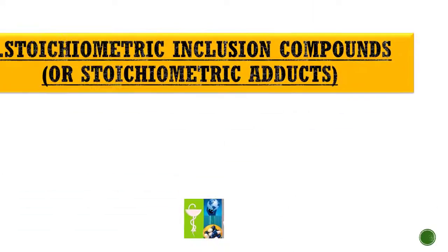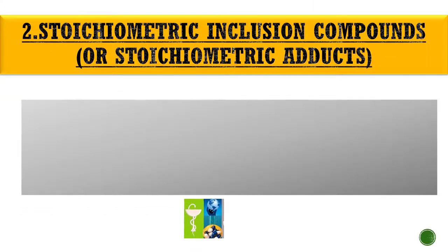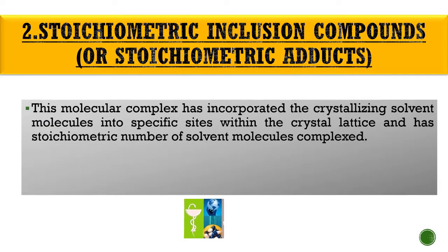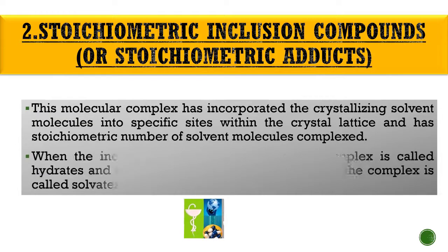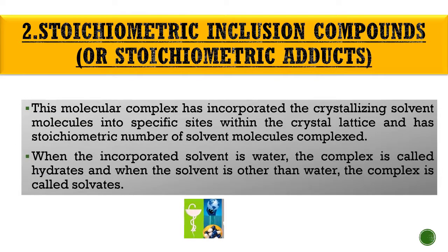Coming to the second category: Stoichiometric inclusion compounds or stoichiometric adducts. This molecular complex has incorporated the crystallizing solvent molecules into specific sites within the crystal lattice and has a stoichiometric number of solvent molecules complexed.